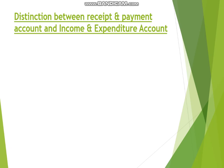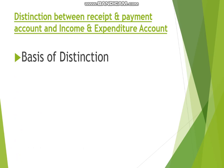Next is the distinction between the Receipt and Payment Account and the Income and Expenditure Account. On the basis of nature: Receipt and Payment Account is a summary of the cash book, but Income and Expenditure Account is like a Profit and Loss Account. On the basis of sides: Receipt and Payment Account has a receipt side and a payment side, but Income and Expenditure Account has a debit side for all expenses and a credit side for all incomes.